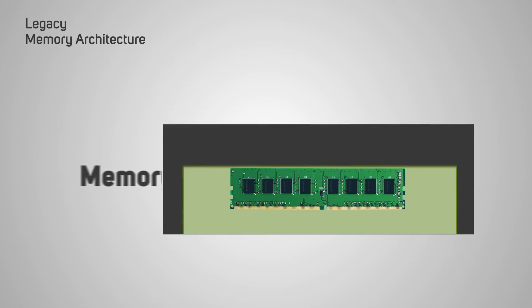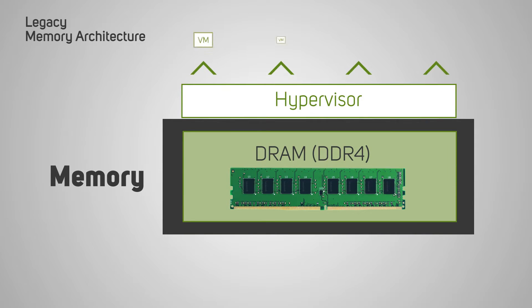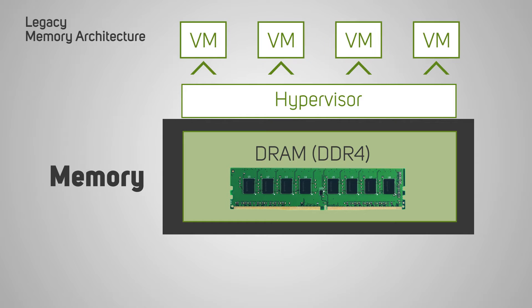Now that we understand where persistent memory fits within the system hierarchy, we need to understand how to introduce it into the system alongside traditional DRAM. Much like DRAM, it needs to be installed in groups dependent on the CPU's memory channel requirements.